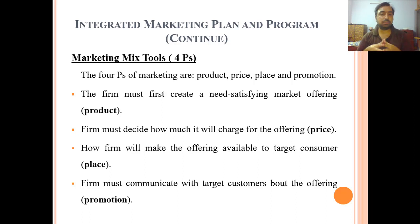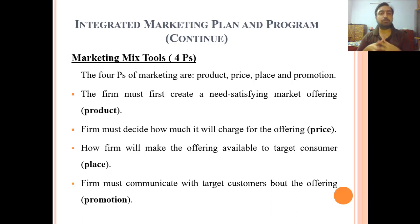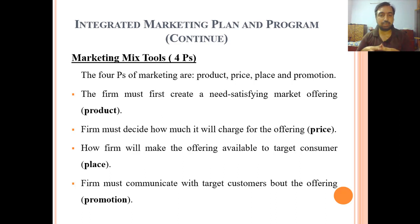To basically marketing mix jo tools hain, yeh four Ps hain. Yeh basically integrated marketing plan or program hai — jo controllable program hai company ke. Inhay company khud control karthi hai aur inka istemal karthi hai consumer ke behavior peh asar andaz hone ke liye — ke woh kis tarah se purchase karthay hain. Iski detail hum aagay ja ke study karengay.